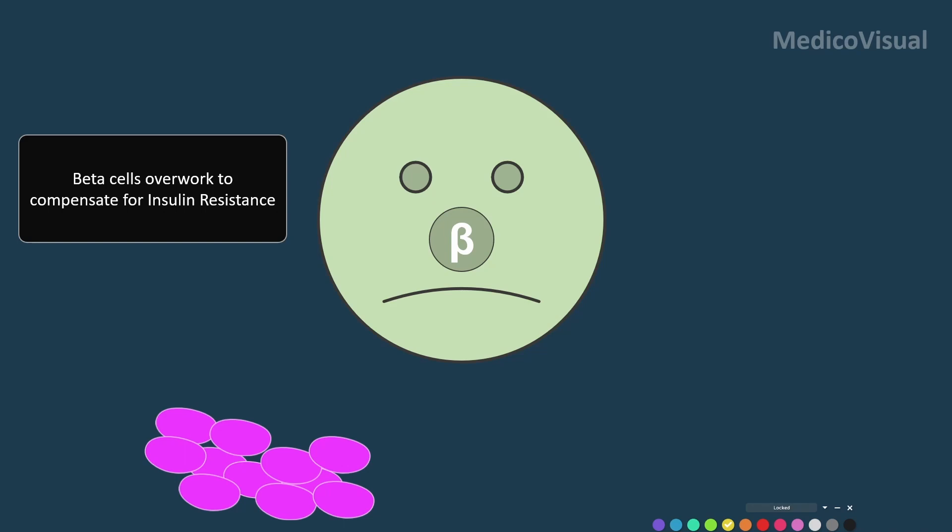Initially in insulin resistance, even with insulin resistance, diabetes mellitus may not start because beta cells have raised the insulin level. So initially in type 2 diabetes mellitus, the insulin level